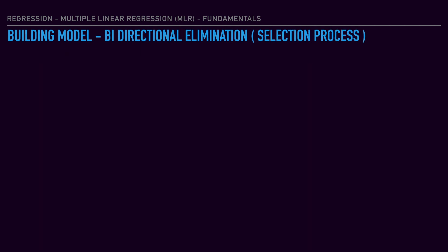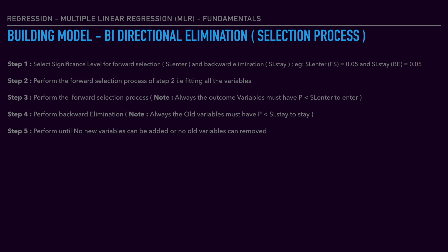The last method is bidirectional elimination, which is a combination of both forward selection and backward elimination. Step one: select the significance level for entry (SL entry = 0.05) and significance level for stay (SL stay = 0.05). Step two is the forward selection process — run all variables in the model. Step three: identify the combination of variables with the lowest p-value. Then run the backward elimination technique. If the p-value is less than SL stay, go to step 3; otherwise go to step 5 and finish by running the model with the existing variables.